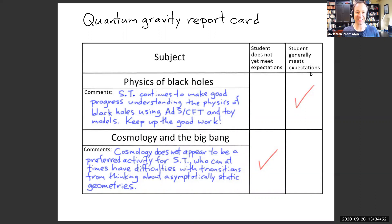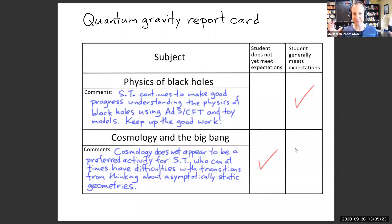This is a report card for string theory or quantum gravity. The subjects are: number one, the physics of black holes — we've been doing very well, especially with AdS/CFT, understanding the physics of black holes. In the last year, we've made progress understanding the page curve and unitarity. So we get the checkmark there. The other subject is cosmology and the Big Bang, another main reason why we want to understand quantum gravity — and here the checkmark is in the other column.